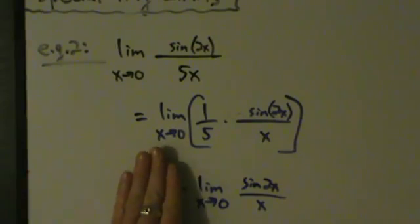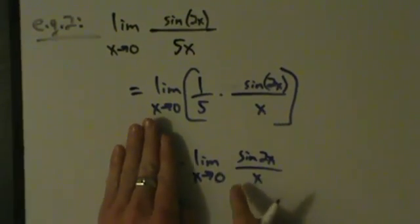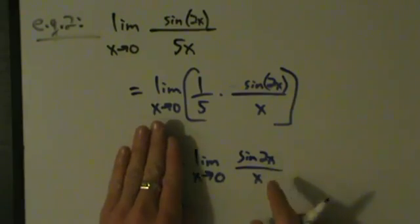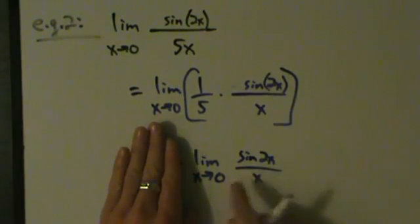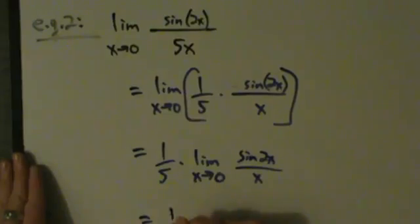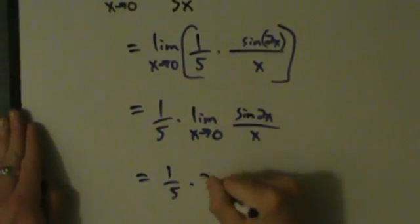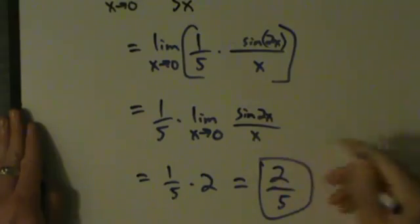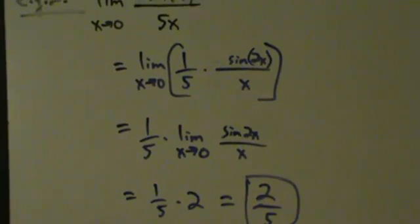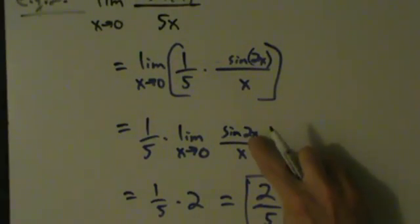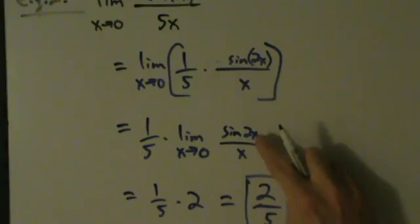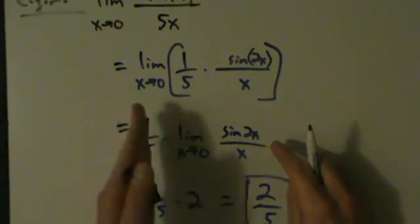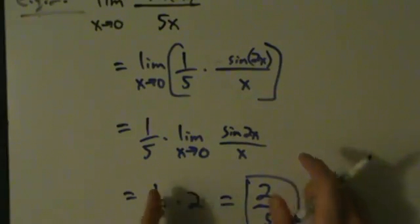Without the 1/5, this is exactly example 1 — the limit as x approaches 0 of sine of 2x divided by x. And we know from example 1 that equals 2. So this is really 1/5 times 2, or in other words, 2/5. That's our answer for example 2. If it wasn't a 2 but a 3, 4, or 7, we'd pull out the 1/5 and then proceed just like in example 1.